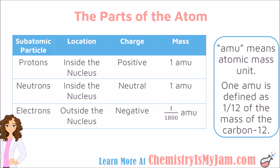Here you have an overview of the different particles. Protons and neutrons are inside the nucleus; electrons are outside. Protons have a positive charge, neutrons are neutral, and electrons have a negative charge. The protons and neutrons are roughly the same size — we define them as having a mass of one amu. Amu means atomic mass unit, and it is based off of the size of a proton and a neutron in the element carbon-12. The proton and the neutron have a mass of roughly one amu and are roughly the same size in terms of mass.